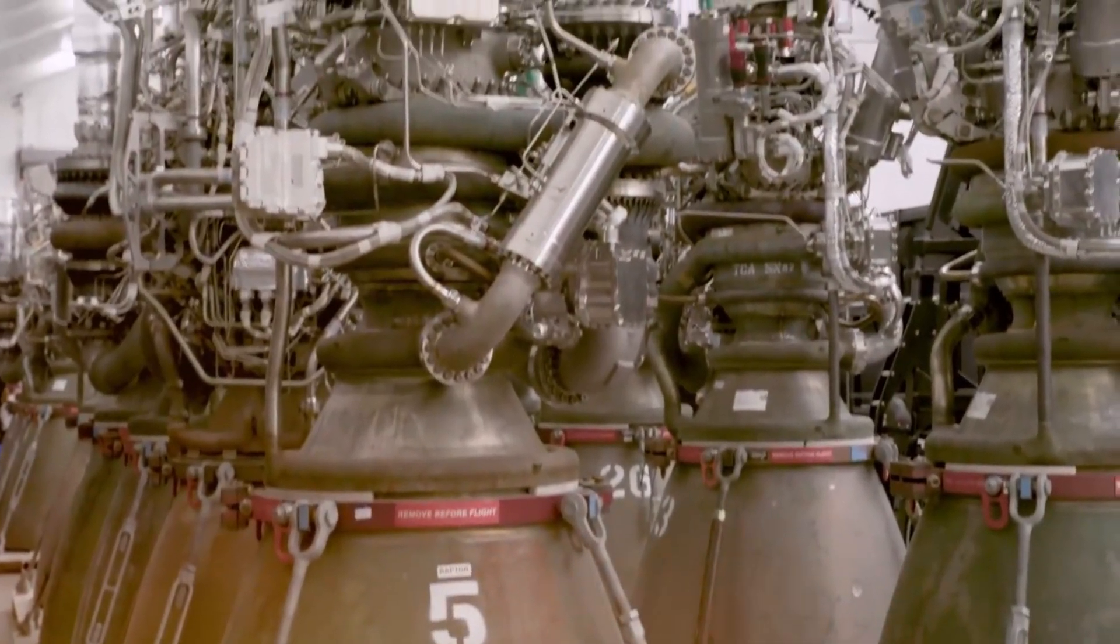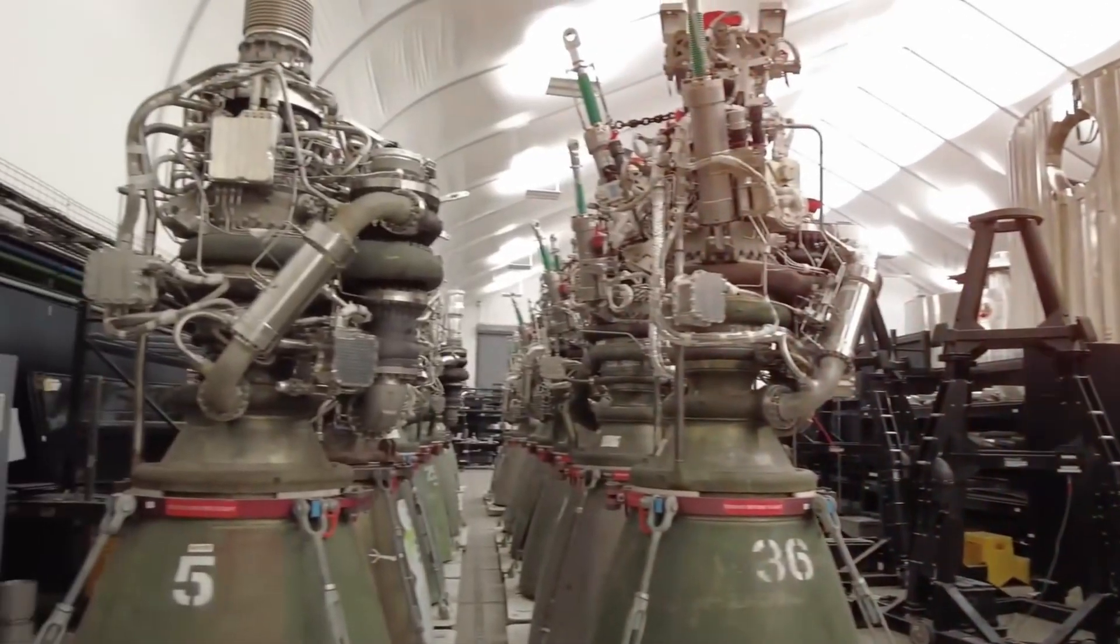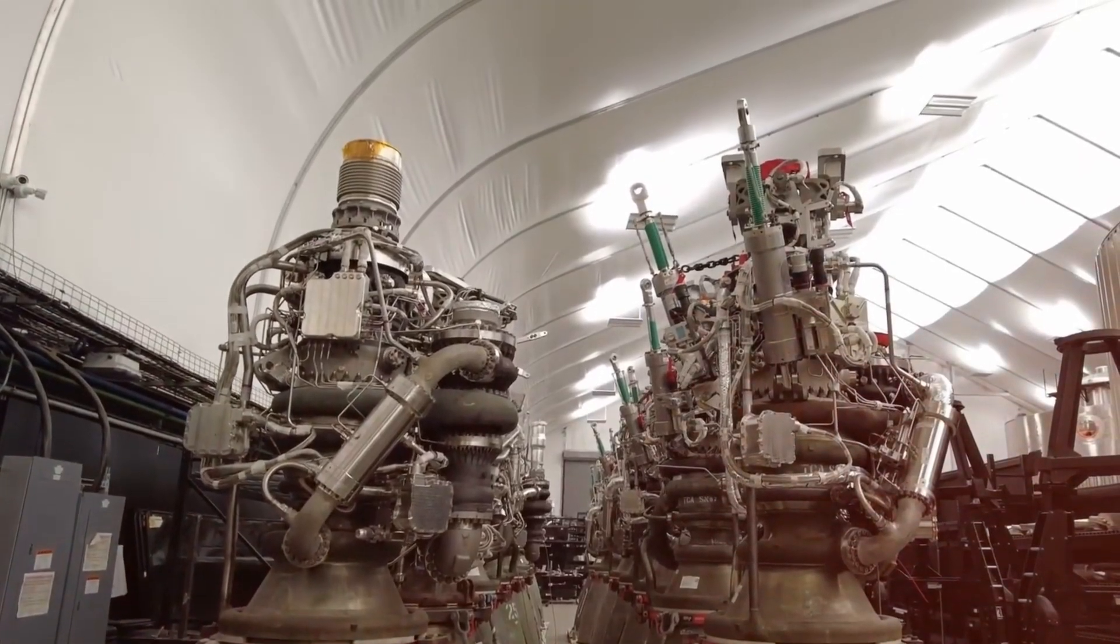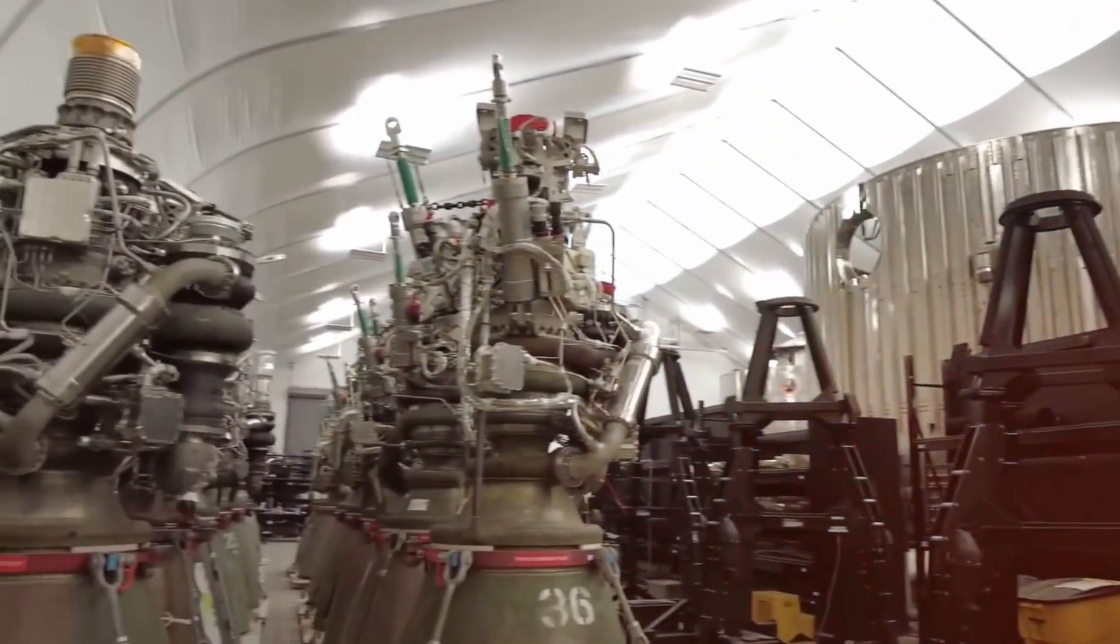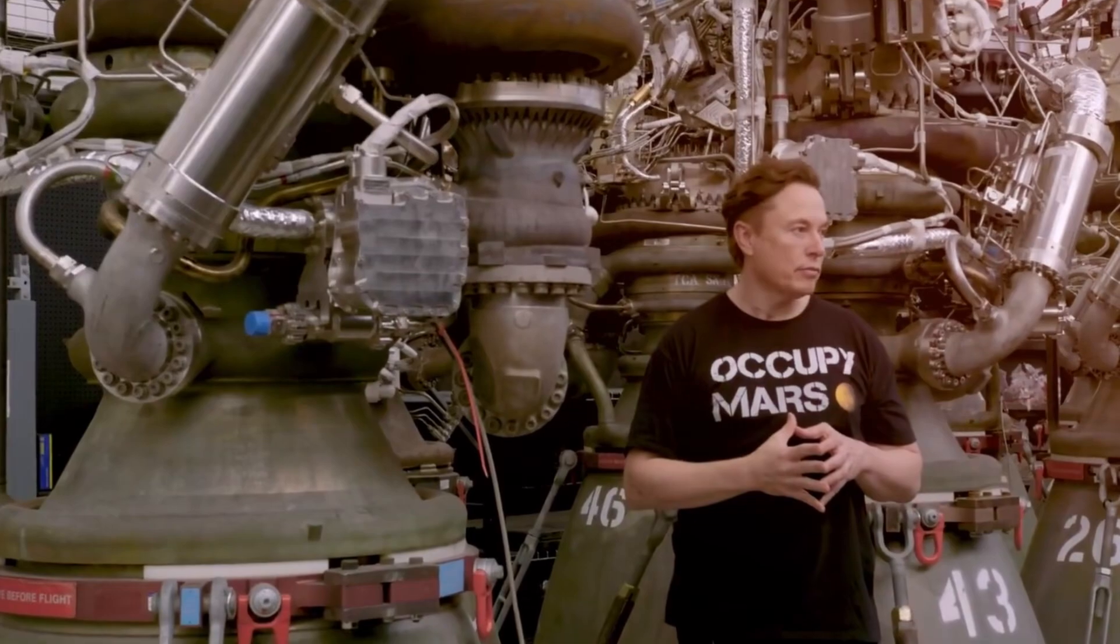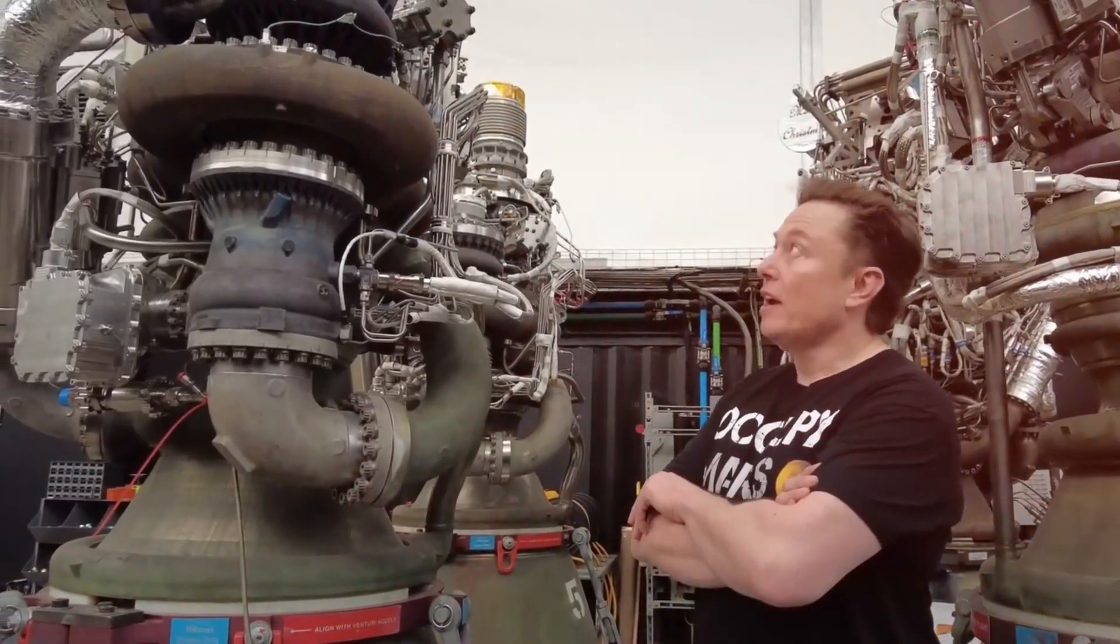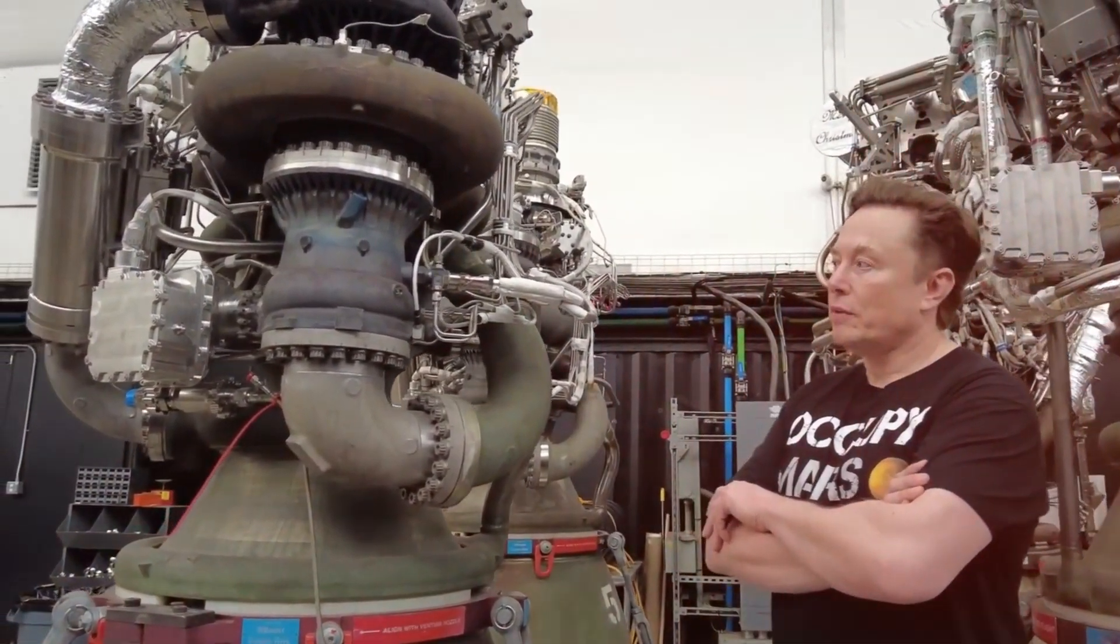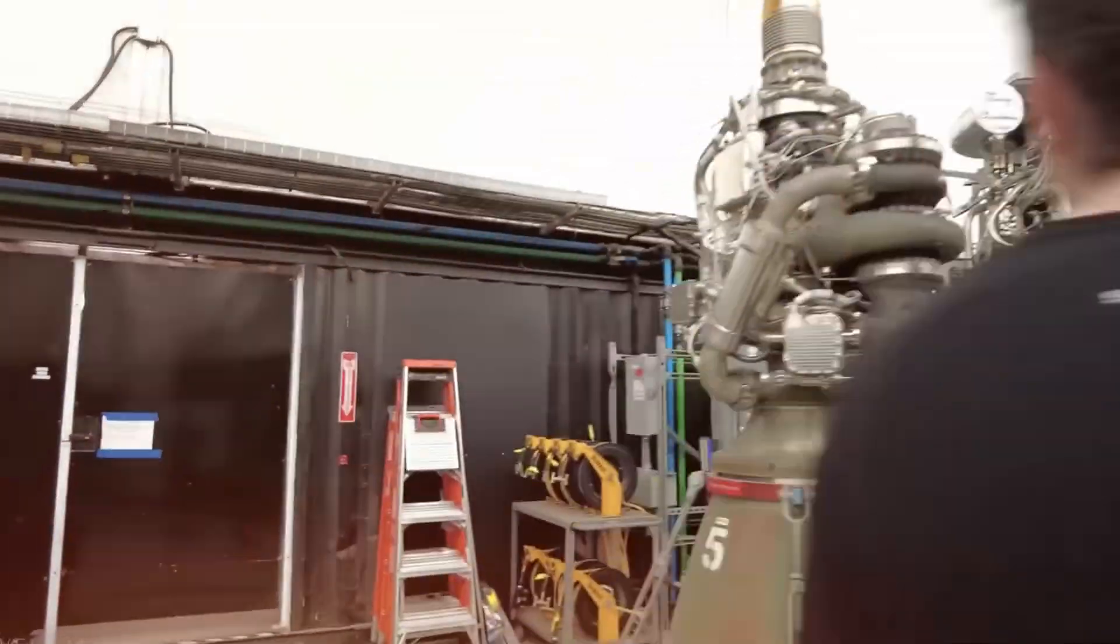Enter Raptor 3, a masterpiece of engineering minimalism. The visual transformation is striking. Gone are the external pipes and complex routing systems. In their place stands an engine that appears deceptively simple from the outside, but as Elon Musk explains, this apparent simplicity masks an incredible feat of internal engineering. The team achieved this by eliminating over 70 percent of the welded and bolted joints present in earlier versions, significantly reducing potential failure points while improving reliability.